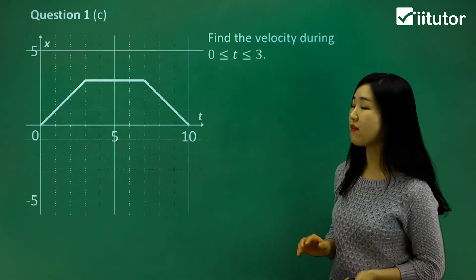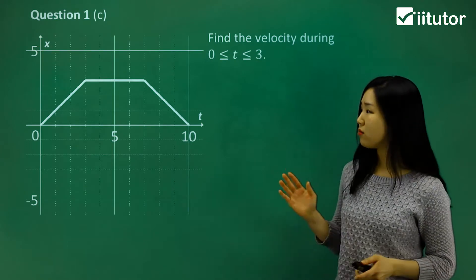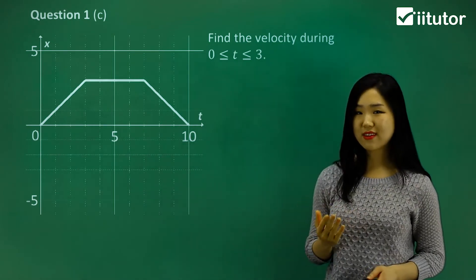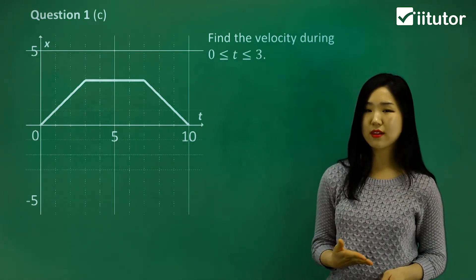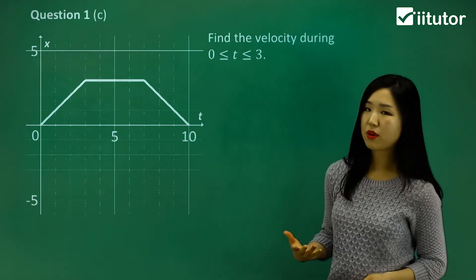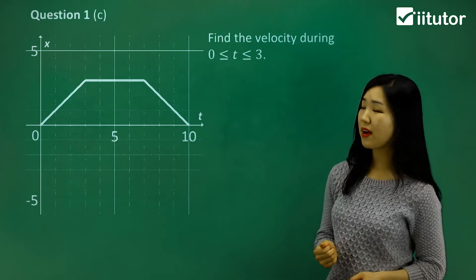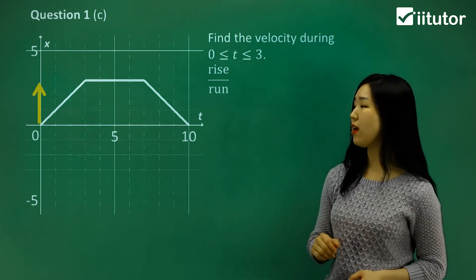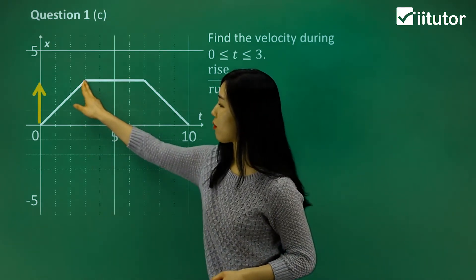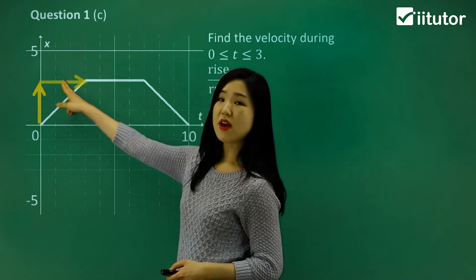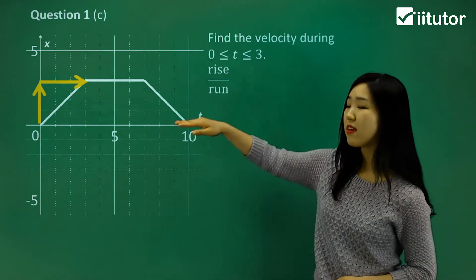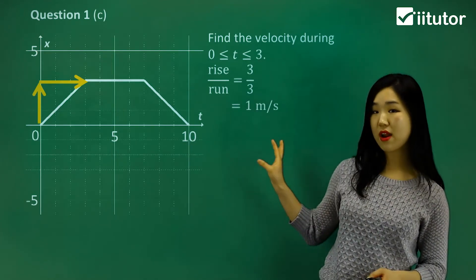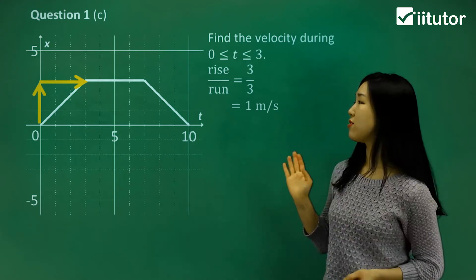Now it's asking for the velocity during time equals 0 to 3, so between 0 and 3. Velocity is more like a speed. When we calculate speed, we want to calculate the gradient — the rate. So velocity is like a rate. I want to look at rise over run because gradient determines the rate. From 0 to 3, the rise goes up by 3 and runs 3 as well. So 3 divided by 3 is 1 — so 1 meters per second. That's the velocity.